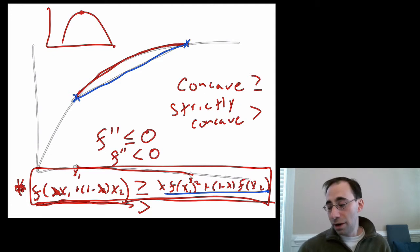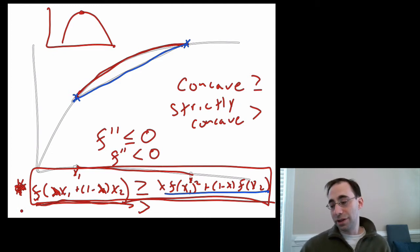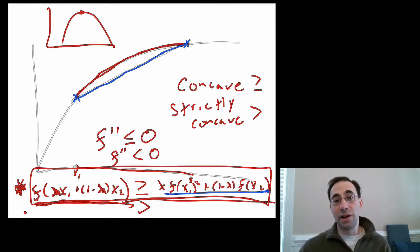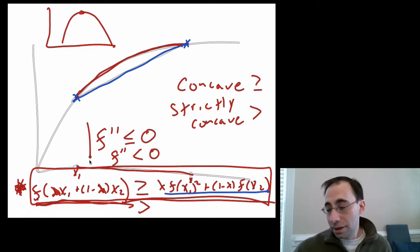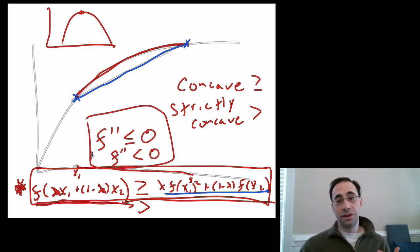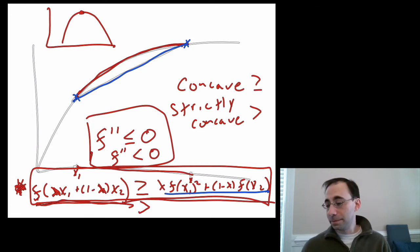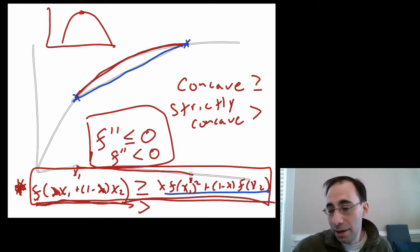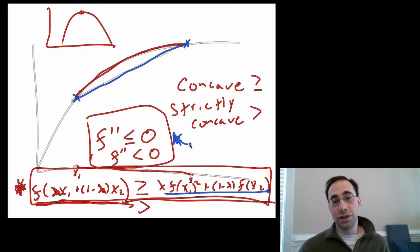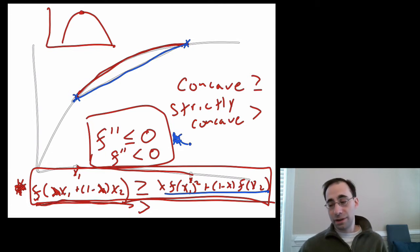The formal star definition is more general — it doesn't require the function to be continuous or differentiable at all; it just requires that the curve be above the line joining any two points. The second derivative condition requires differentiability. In practice, most examples used when maximizing are differentiable functions, and it's much easier to differentiate twice than to check the formal condition. So the second derivative test is what we'll use most often.